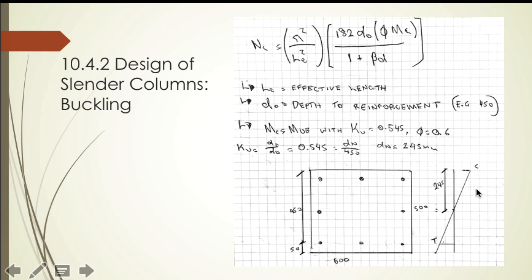For slender columns, the next check we need to do, which we don't have to do for short columns, is that of buckling. Here we have the buckling formula: N_c, which is a function of the effective length, the depth of the neutral axis, and the moment at a certain value of k_u, and (1 plus beta_d), which takes into account the creepage effects.